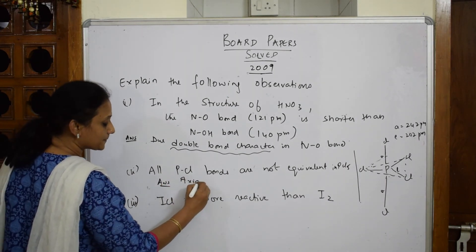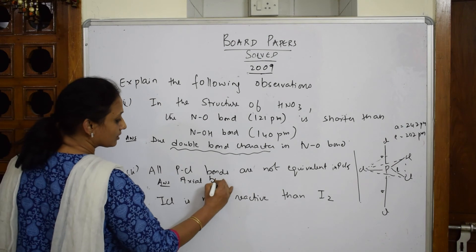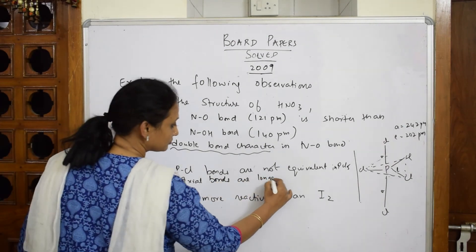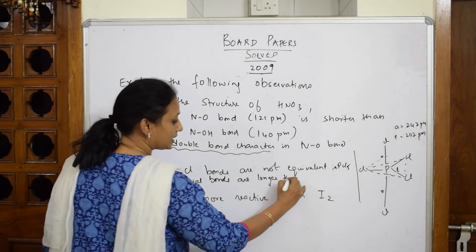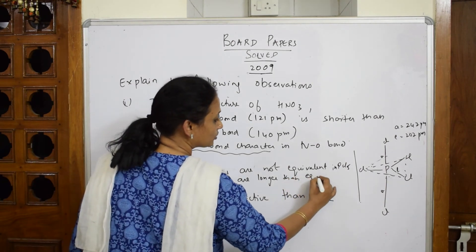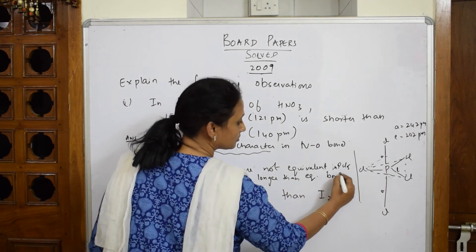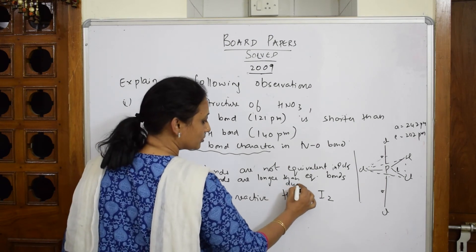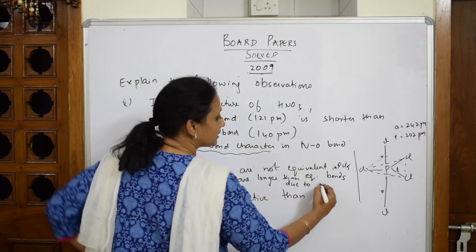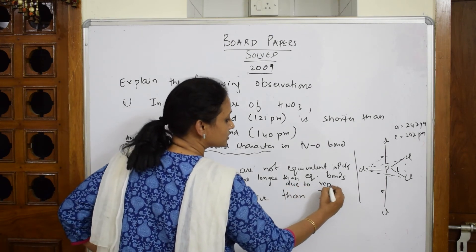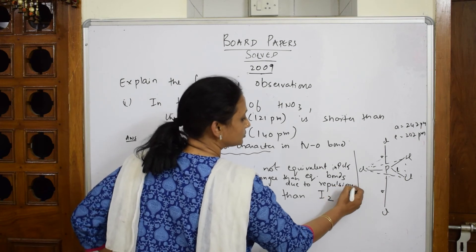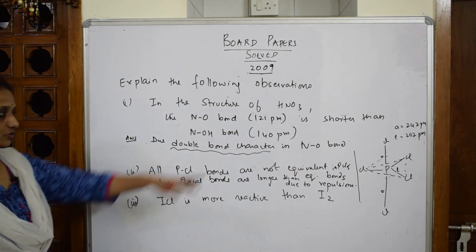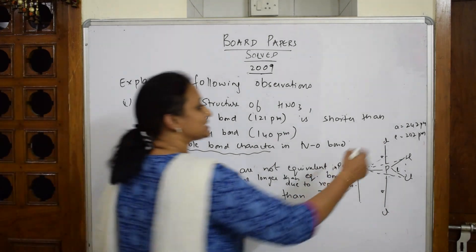Try to draw the structure first and then write the answer. Axial bonds are longer than equatorial bonds. Why? Due to lone pair repulsions. That's it — draw that structure and include the bond length data too, as that's important.